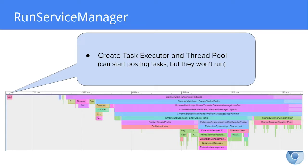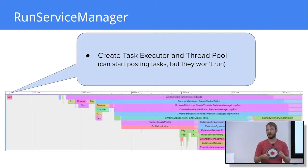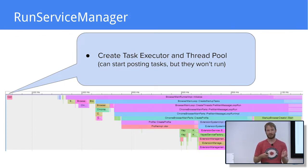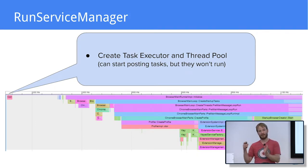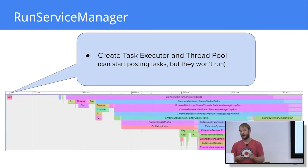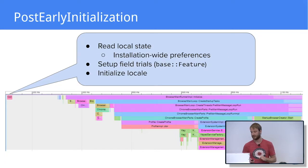Next, we create the task executor and the thread pool. This allows code to start posting tasks using the base post task and base thread task runner handle APIs that we'll look at later in this talk. However, the tasks will not start running immediately.